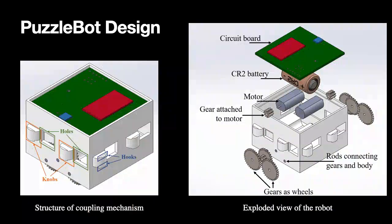Here we show two views of the robot design. On the left-hand side is the structure of the coupling mechanism. On each side of the robot, we have two knobs, and on each of the knobs, we have two hooks on the top and the bottom. There are also two holes next to the knobs. The mechanism works so that the robot is able to insert its knobs into the holes of its neighboring robot.